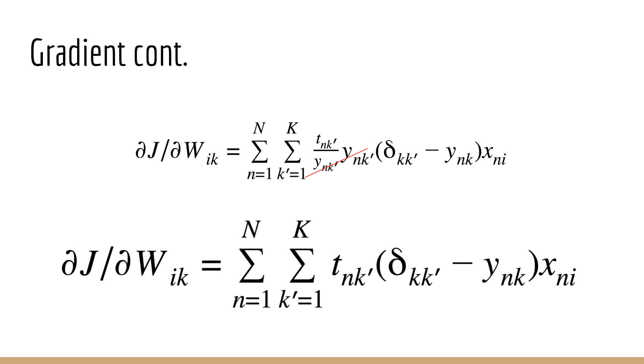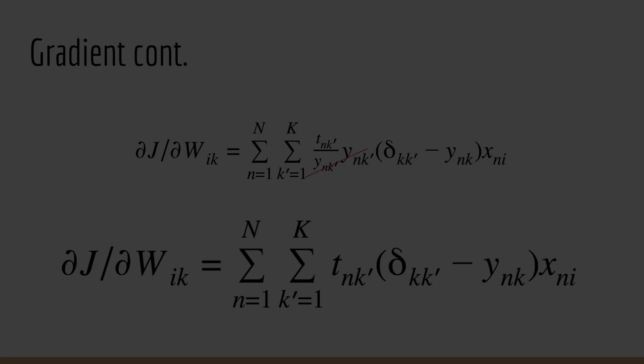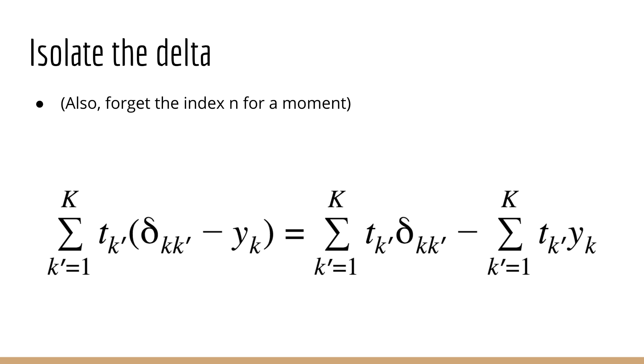First, remember that the delta function can only be 1 or 0. It's 1 if k' is equal to k, and 0 if k' is not equal to k.